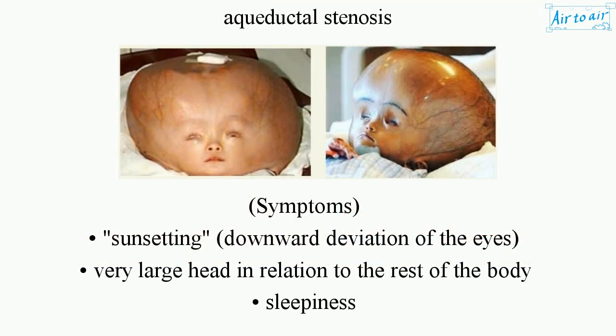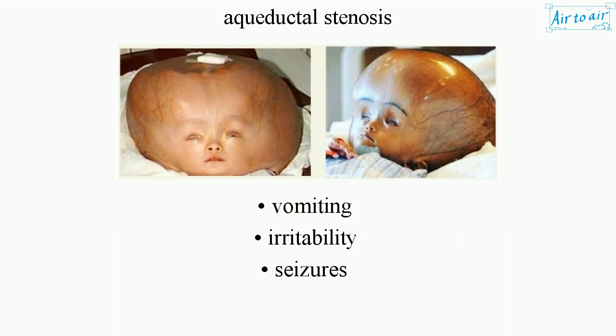Symptoms include sunsetting — downward deviation of the eyes — a very large head in relation to the rest of the body, sleepiness, vomiting, irritability, and seizures.